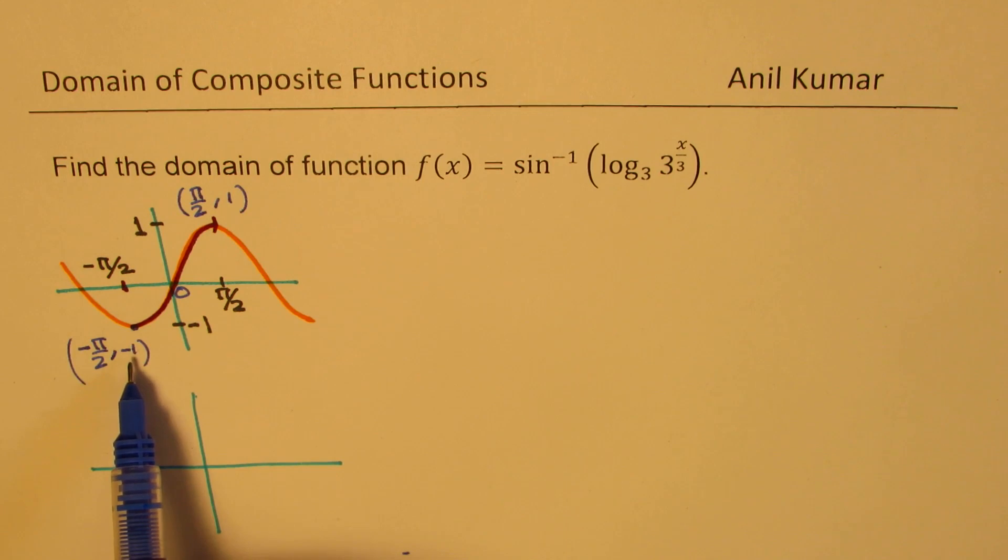So we get a point which is minus 1 minus pi by 2. So in the inverse, we get minus 1 and minus pi by 2. Let's say this point here is minus 1 minus pi by 2.